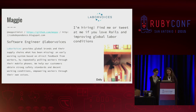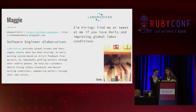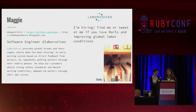Maggie here — you can find all my handles there: Mapstimus on GitHub, and there's a blog I used to write on and may someday again. I'm a software engineer at Labor Voices. Labor Voices provides global brands and their supply chains an early warning system based on direct feedback from workers by repeatedly polling workers through their mobile phones. We help customers obtain strong safety standards and decent working conditions, empowering workers through their own voices. I'm bad at elevator speeches, so I took that from our website.